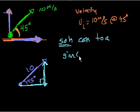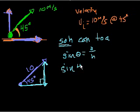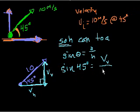We know that sine of theta equals opposite over hypotenuse. So the sine of 45 degrees equals my velocity vertical over 10. If I solve for vertical velocity, I get vertical velocity equals 10 times the sine of 45 degrees.